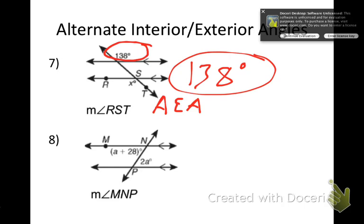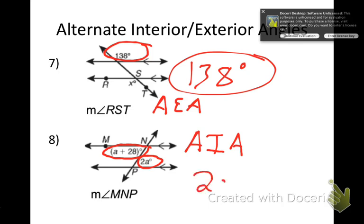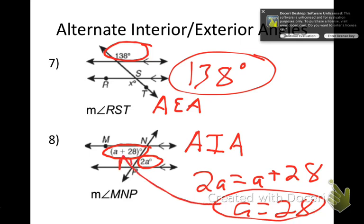Number 8: I'm given A + 28 and 2A. Those are alternate interior angles, and alternate interior angles are congruent. So I set them equal: 2A = A + 28. Solving for A gives A = 28. Plugging back in: 28 + 28 equals 56 degrees.